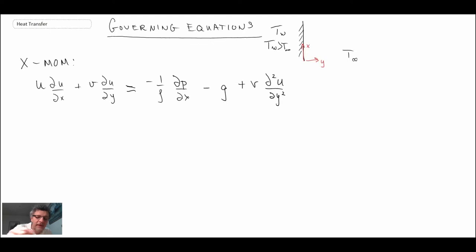So that is the x-momentum equation. One thing you may notice immediately if you compare this to the Navier-Stokes equation: we have a minus g here. The reason it is negative is because the gravity vector acts downwards, which with our coordinate system would be a negative value.